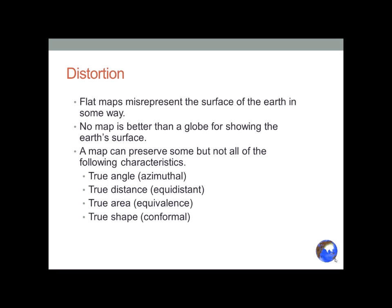The best representation of a map is a globe for showing the earth's surface. Even globes distort the surface because they don't show topography — the lay of the land. If the vertical and horizontal scales were the same, a globe would be as smooth as a bowling ball. Those globes with little bumps that represent mountain ranges — that's vertical exaggeration.